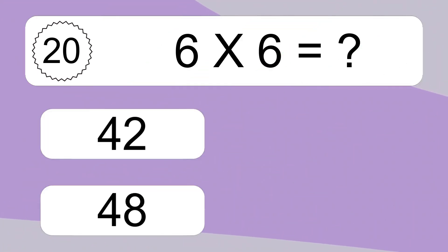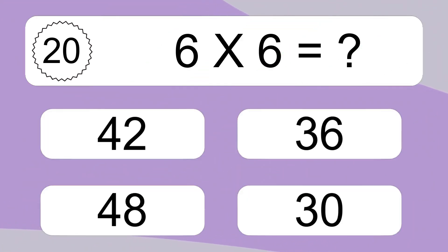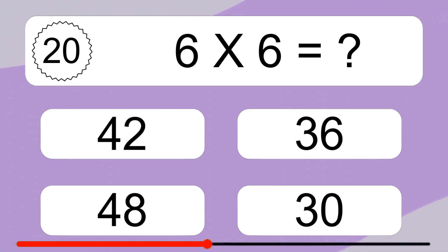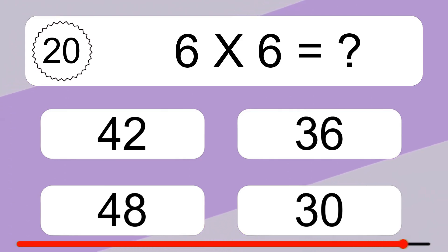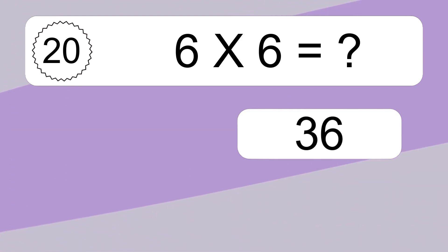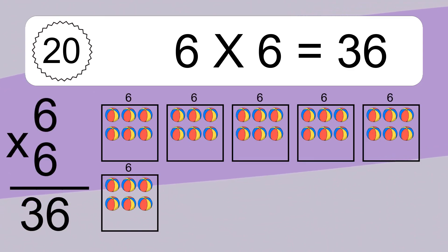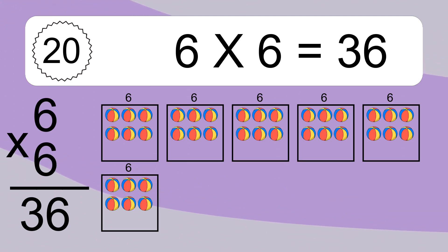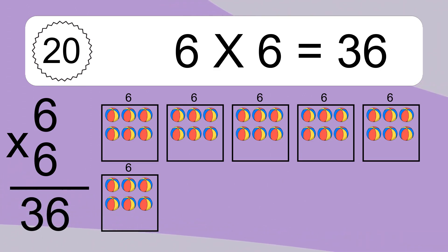6 x 6 equals what? 6 x 6 equals 36. We have 6 boxes, and each box has 6 colorful balls inside. If you count all the balls in all the boxes together, you will have 6 x 6 balls. This equals 36 balls.